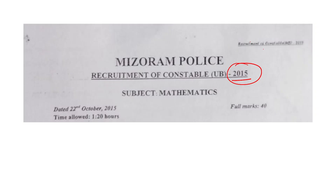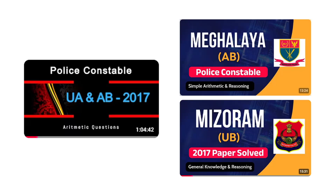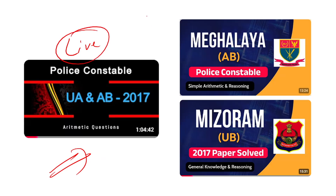Recruitment of Constable UB 2015, full mark 40, date 22nd October 2015. I will also tell you about Police Constable 2017 — this video will help boost your confidence. UB 2017 GK and reasoning will also be uploaded.